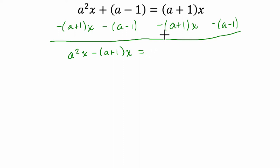And then on the right hand side here, a plus 1 times x minus itself is 0, and what's left over is minus a minus 1. So here, it might not be immediately obvious what we can do, but we want x all by itself, so I see in both terms you've got an x. So we can factor that out.